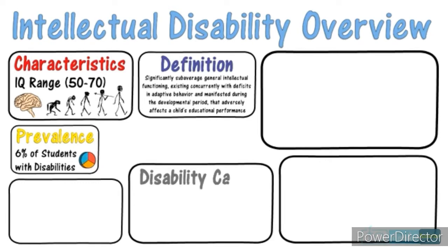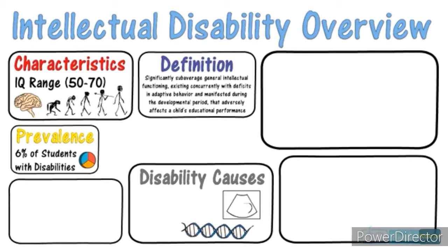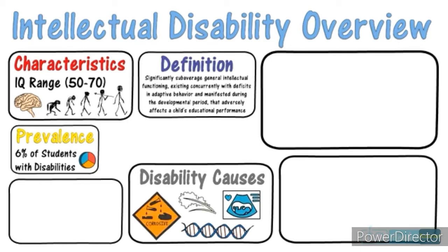We'll look at some of the causes of this particular disability. One factor is that it is a genetic condition, where genes are passed on from parents to offspring. Intellectual disabilities can also be caused by complications during birth. Other causes include exposure to corrosive and dangerous chemicals, and there is also some evidence that malnutrition may be a possible cause of intellectual disabilities.